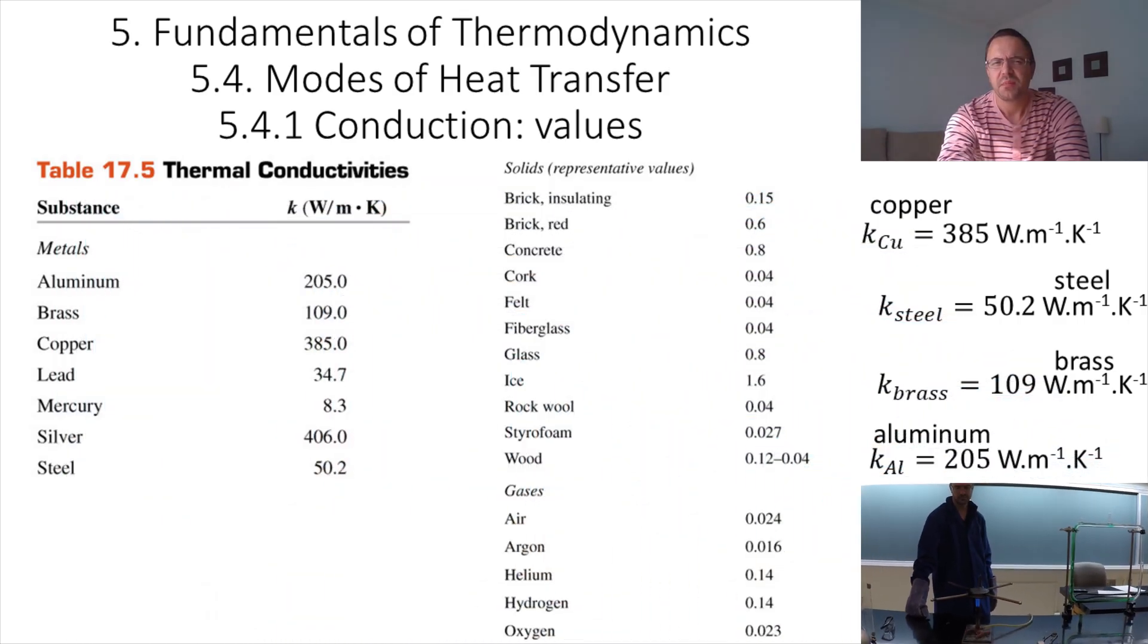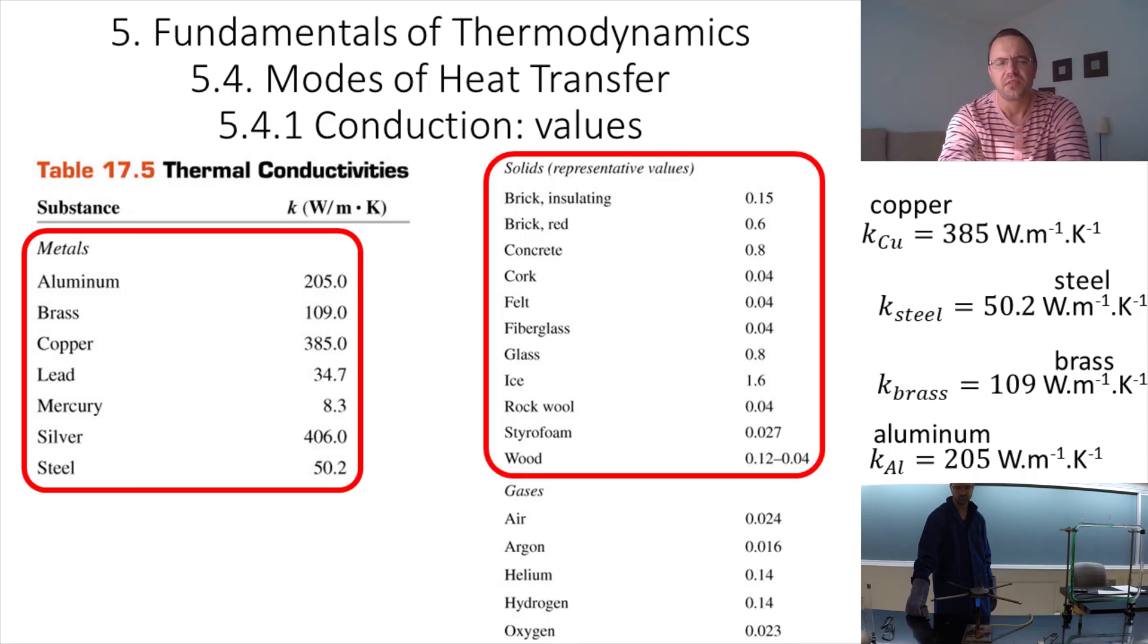In this table you can see more values for the coefficient of thermal conductivity. You can see that metals in general have larger thermal conductivity than other solids. This is because, as we mentioned earlier, electrons are free to move in metals and so they can transfer energy.